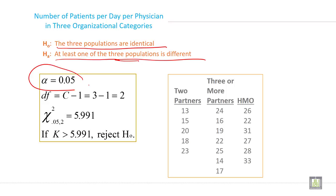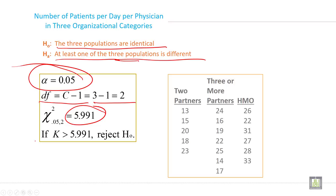The type 1 error rate, or significance level alpha, is 0.05. The degrees of freedom is c minus 1, which is 3 minus 1, equal to 2. The chi-square critical value is 5.991, which you can verify from the chi-square table. The decision rule is: if K is greater than 5.991, reject the null hypothesis.